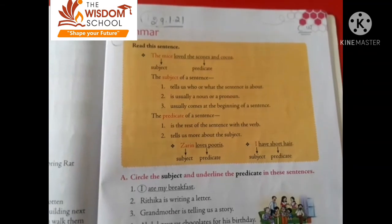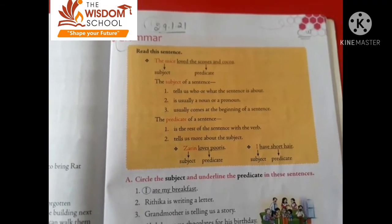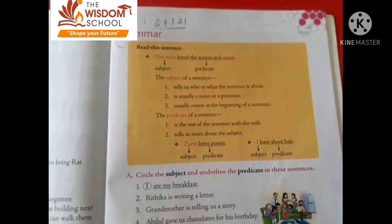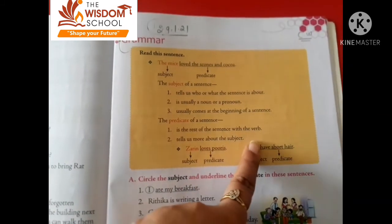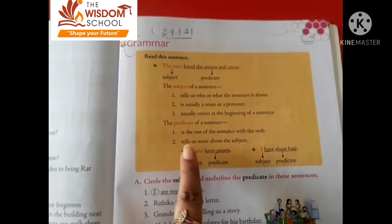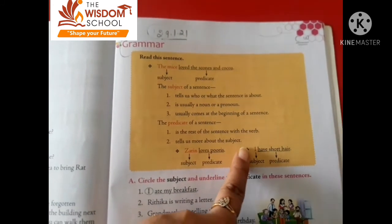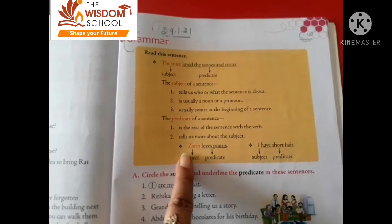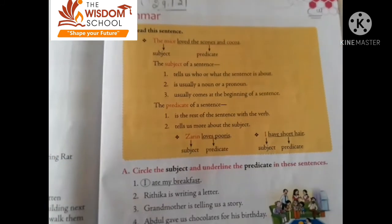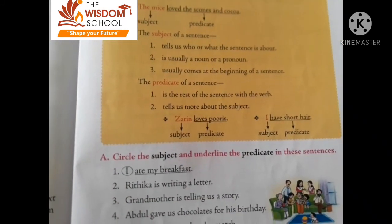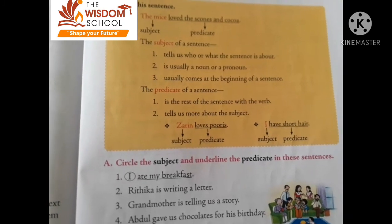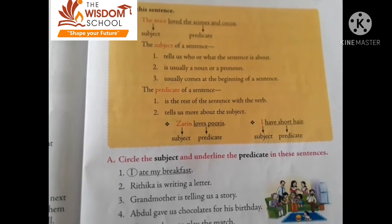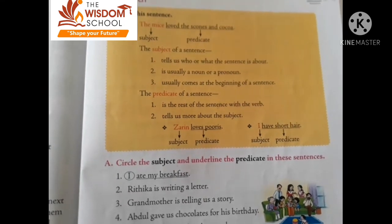और predicate क्या होता है? It is the rest of the sentence with the verb. जो subject के बाद वाला rest sentence होता है, वो verb के साथ होता है — वो predicate होता है। It tells us more about the subject. For example: 'Jerry loves puris.' Here Jerry is the subject, और Jerry के बारे में बताया जा रहा है कि Jerry को puris पसंद है। So 'loves puris' is the predicate.